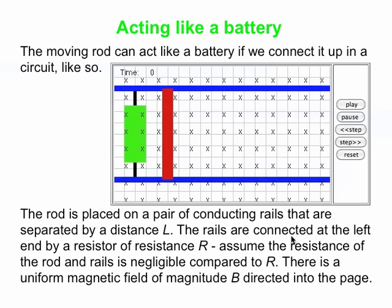So what we do next is we hook this up in a circuit. So here's the same rod, but it's hooked up in a circuit now. The blue things are conducting rails. This is like the rails you find on a train track. So they're a pair of rails parallel to each other. They are conducting, separated by some distance L. L is the length of the rod, in fact.